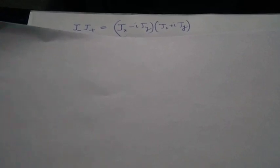Similarly, computing J−*J+, we write out the product and expand into four terms. Simplifying the last two terms using the commutator of Jx and Jy, and noting that i times i gives −1, we get J−*J+ = Jx² + Jy² − h-bar*Jz as equation (4).